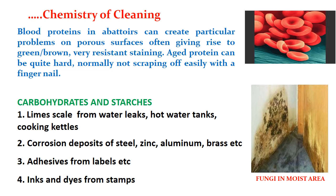Other soil types include carbohydrates and starches, lime scale from water leaks, hot water tanks and cooking kettles, often visible as scale deposits. There can also be corrosion deposits of steel, zinc, aluminium, brass, etc. Sometimes there are adhesives from labels and inks and dyes from stamps. These are some of the other soil materials that should be taken care of in meat plant cleaning.